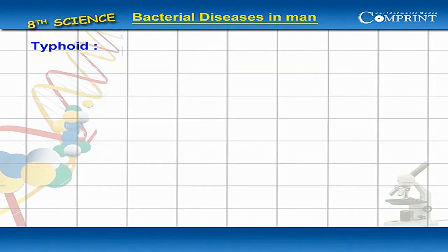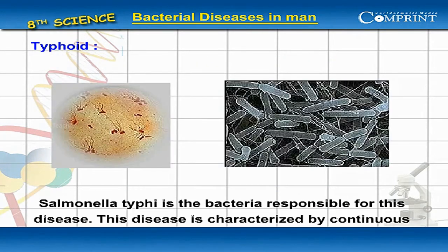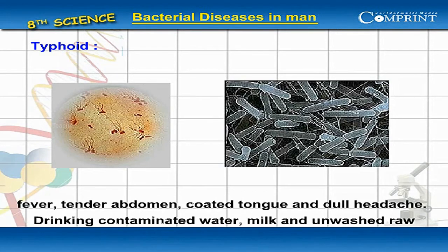Typhoid. Salmonella typhi is the bacteria responsible for this disease. This disease is characterized by continuous fever, tender abdomen, coated tongue and dull headache.